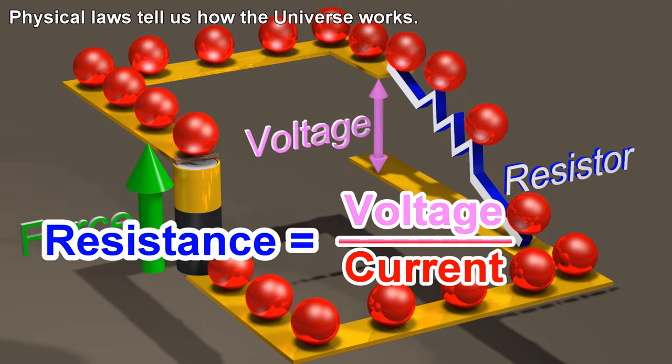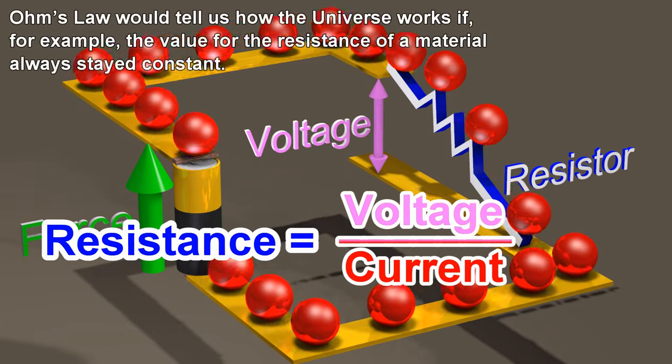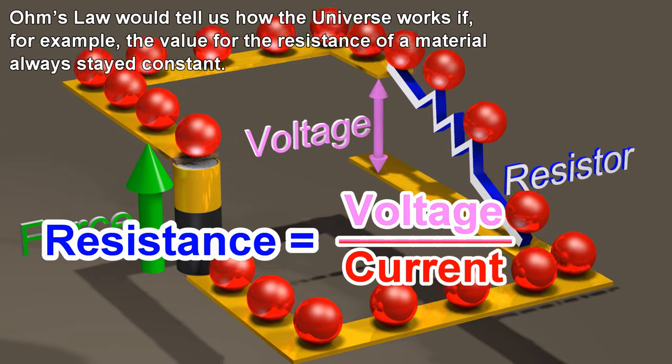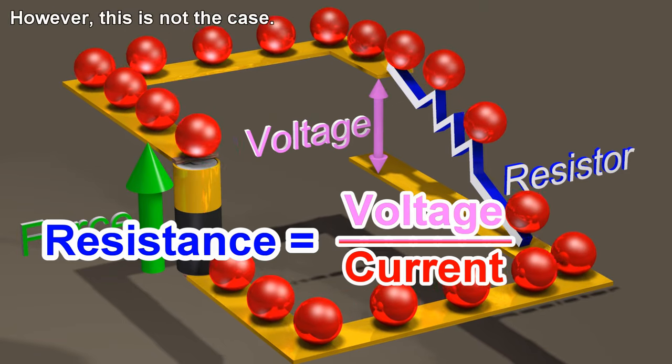Physical laws tell us how the universe works. Ohm's law would tell us how the universe works if, for example, the value for the resistance of a material always stayed constant. However, this is not the case.